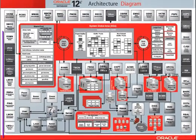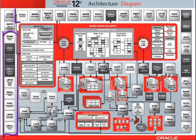The processes on the left, starting with RSMN and including also RCBG, are all rack-related processes.